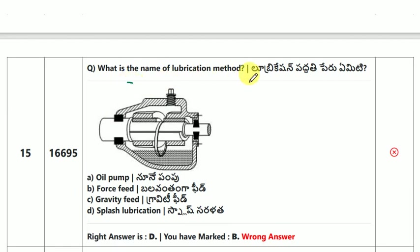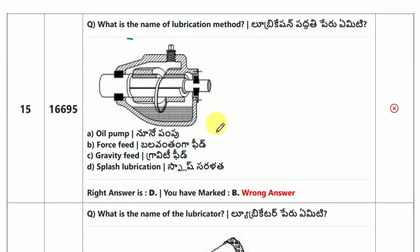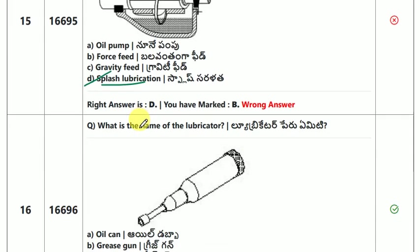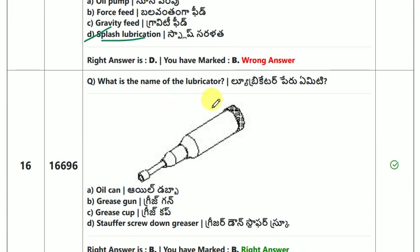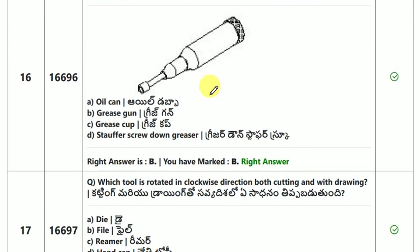What is the name of this lubricant method? The name of this lubricant method is splash lubrication. What is the name of this lubricant method? The name of this lubricant method is grease gun.